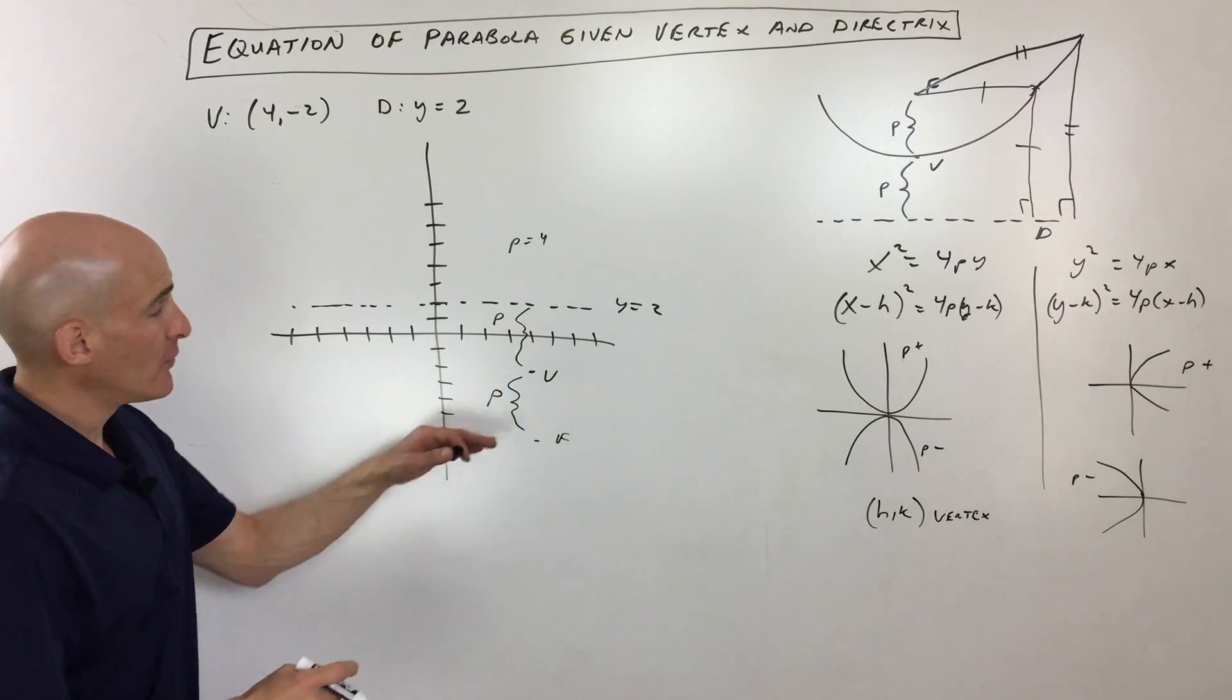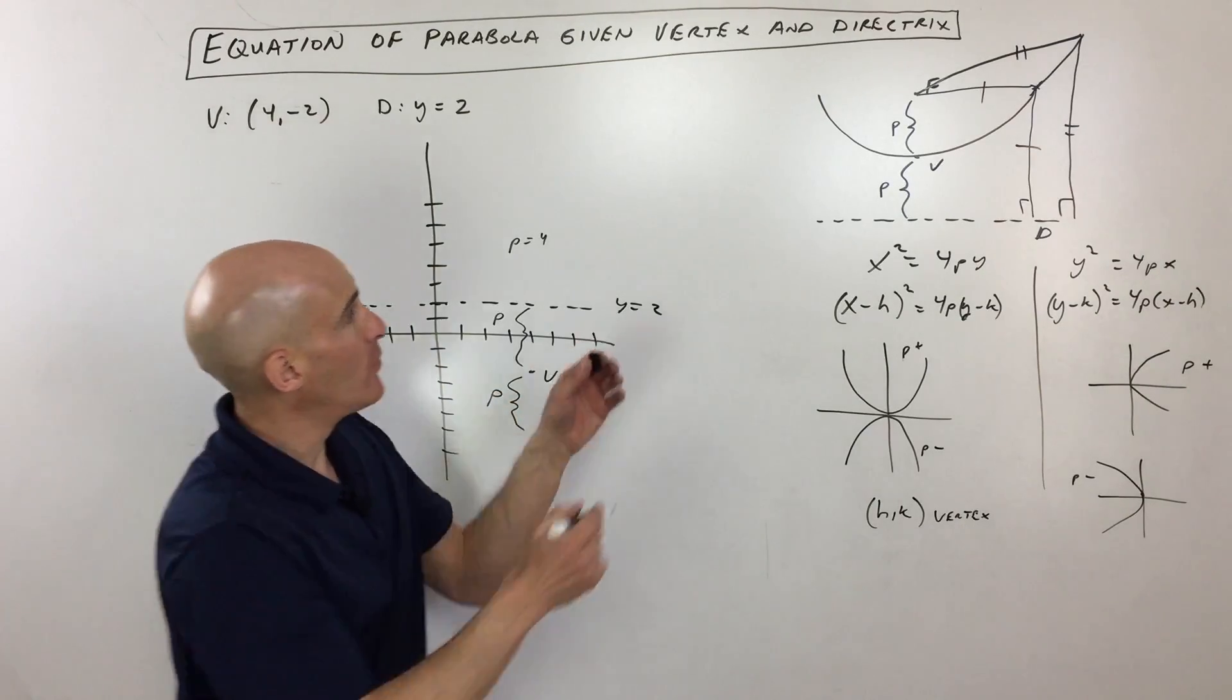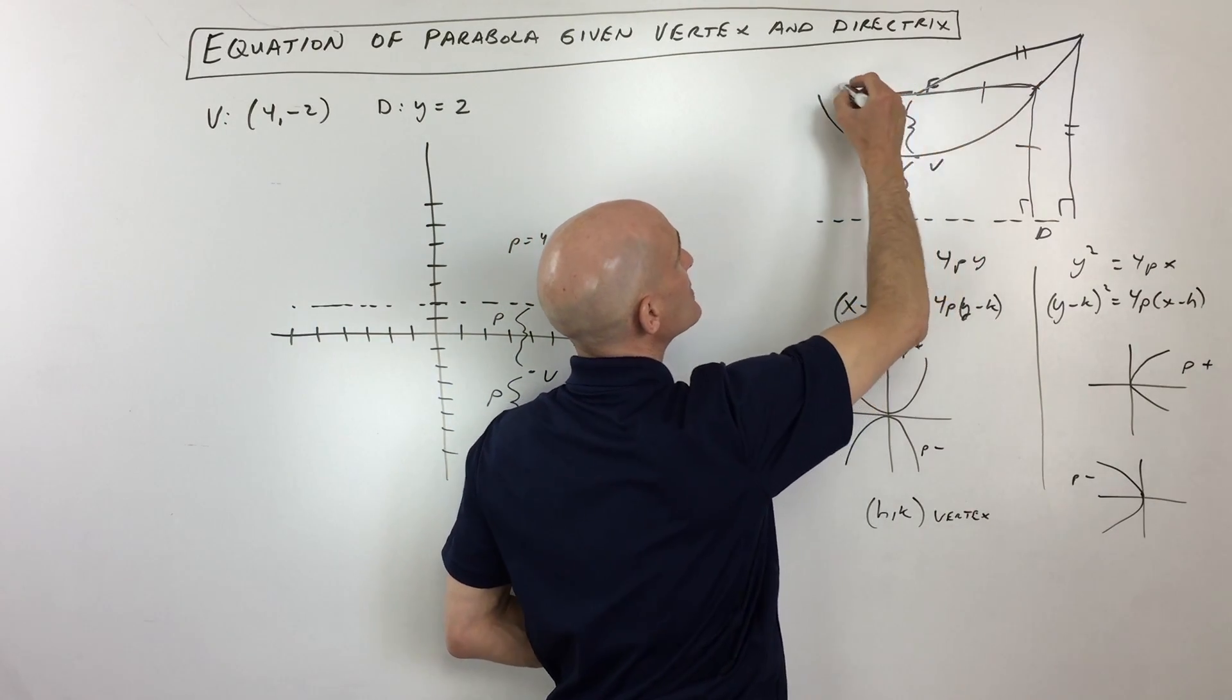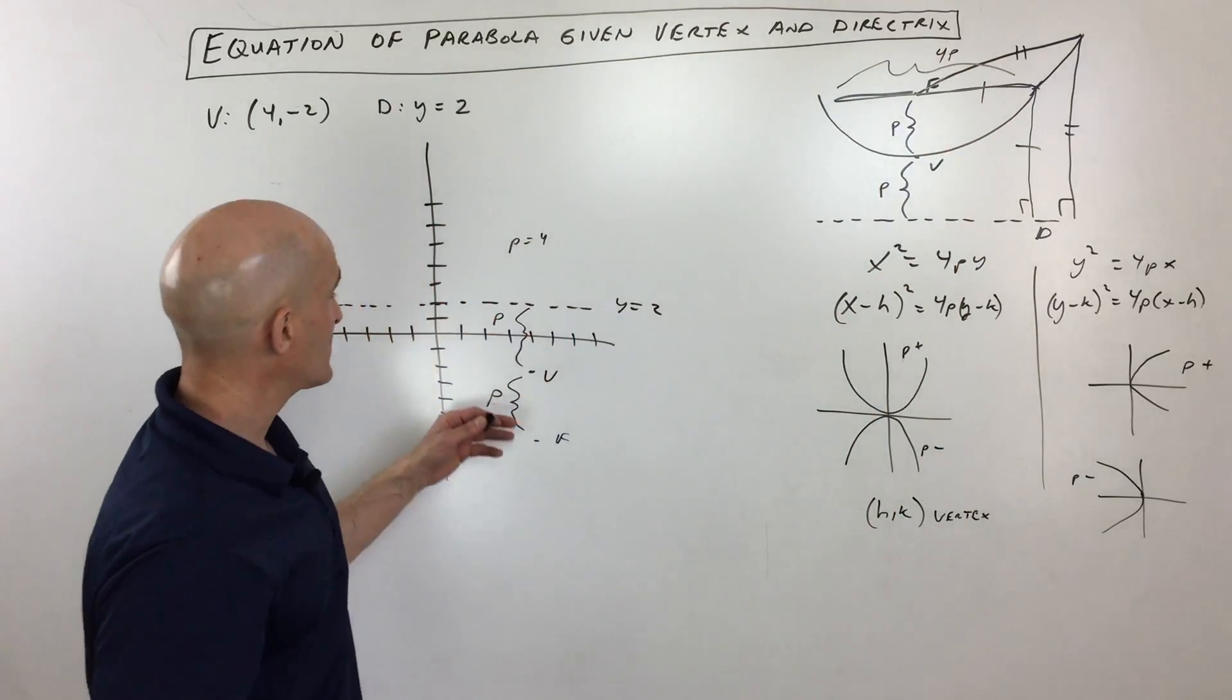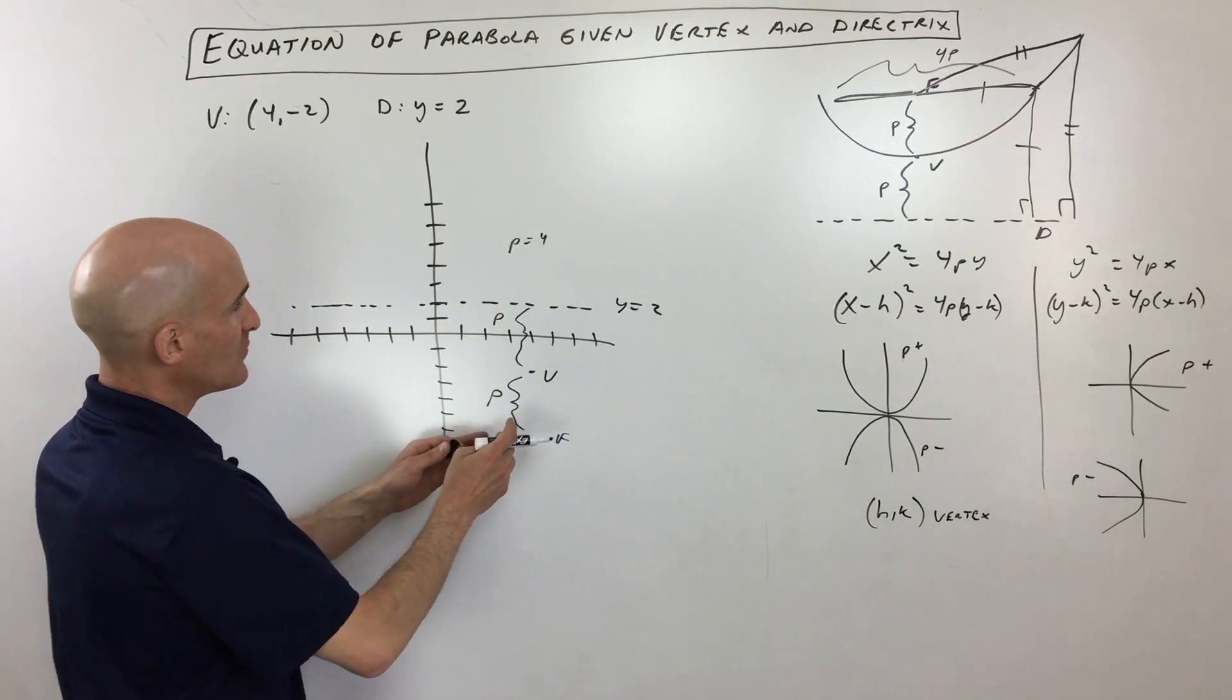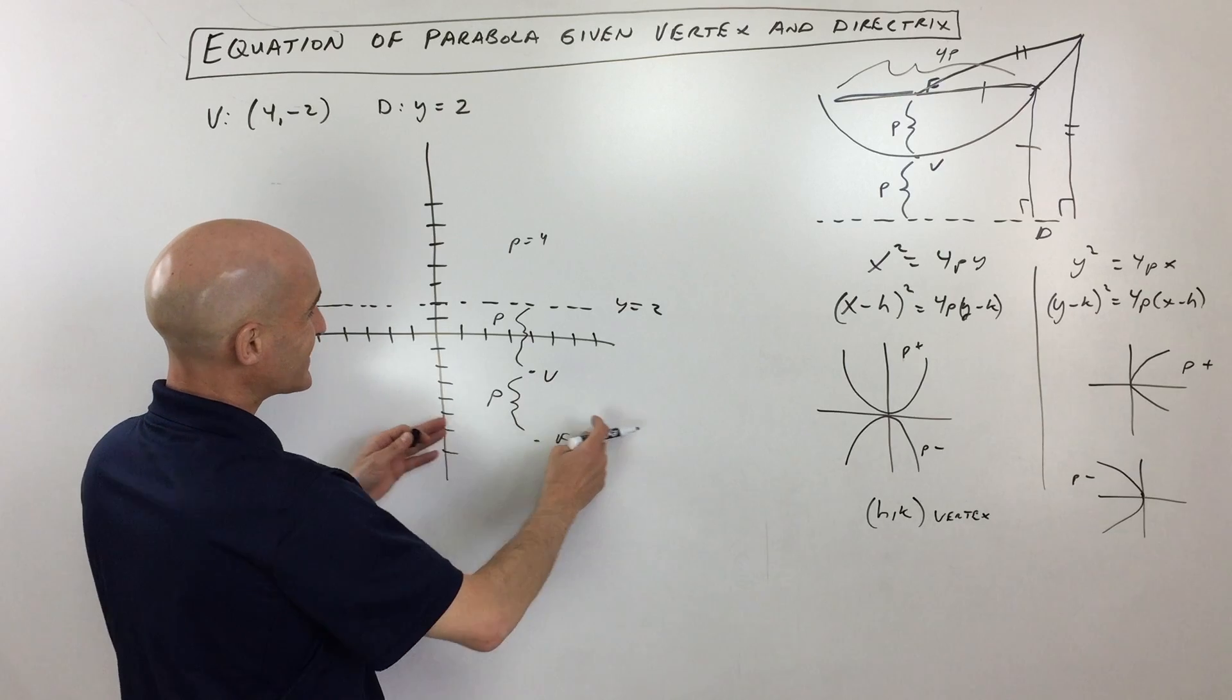At the level of the focus, I didn't mention this in the intro, but the width of the parabola at the level of the focus, this width right here is always going to be 4p. So in this case, since p is 4, it's actually going to be 4 times 4 is 16 wide.